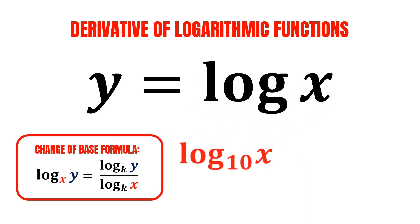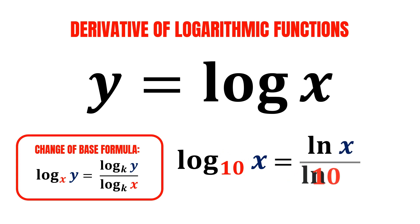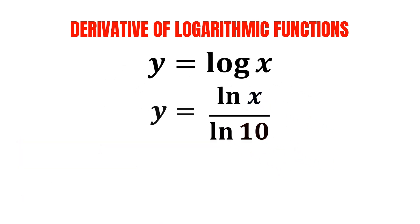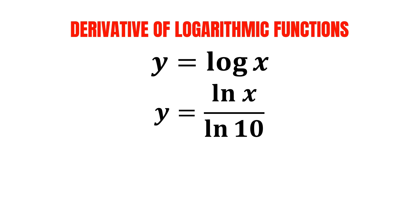In this case, we want to change our base from 10 to base e, which is the natural logarithm. We are doing this to make our differentiation easier. By changing the base, we get natural log of x divided by natural log of 10, and we have changed the base from base 10 to base e, natural logarithm.